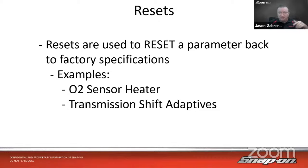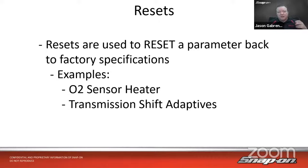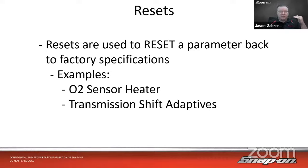All a reset does is go in — usually it's just a little button on the screen — and it resets whatever the computer's default program is. For example, on the oxygen sensor heater: 2006 and newer GM vehicles went with what they call a resistance-compensating oxygen sensor heater circuit. When the sensor is brand new, the resistance in the heater circuit is set at a certain level, and the amperage required to get it up to temperature is not all that much. As it heats and cools over time, that resistance increases, and the computer learns to increase the amperage to keep the element heating up as quickly as it's supposed to.